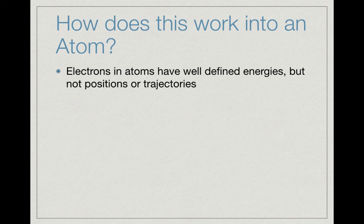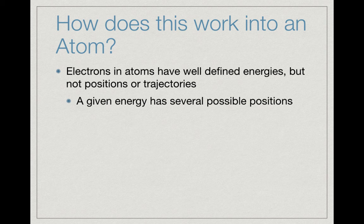We're taking a look at how the concept of quantum mechanics works into an atom and how we work that into the model of an atom. We saw that electrons have a non-deterministic positioning, meaning that while they may have well-defined energies, they really don't have well-defined positions or trajectories.